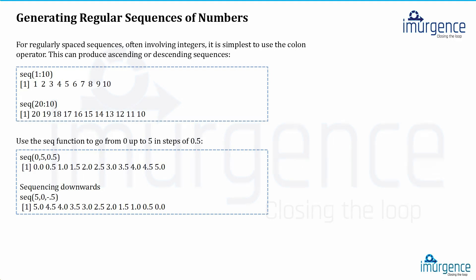The default gap with the colon operator is assumed to be 1. When using the `seq()` function, you get the flexibility to specify the step. For example, `seq(1, 10, 2)` will produce 1, 3, 5, 7, 9 — separating values by 2. Similarly, `seq(0, 5, 0.5)` starts at 0, ends at 5, increments by 0.5, giving 0.0, 0.5, 1.0, 1.5, 2.0, 2.5, and so on. You can also do a reverse sequence with `seq(5, 0, -0.5)`.